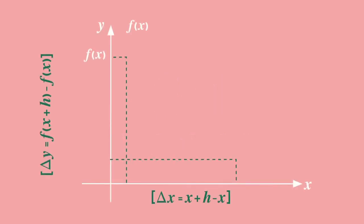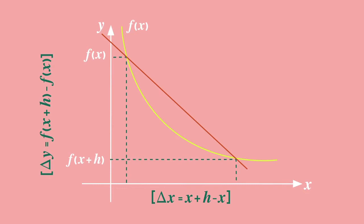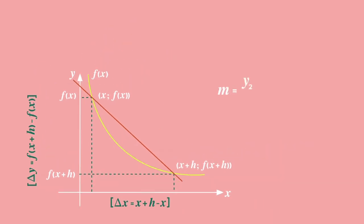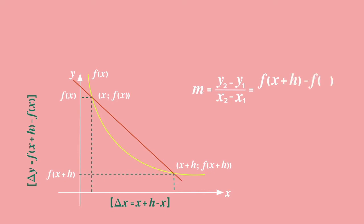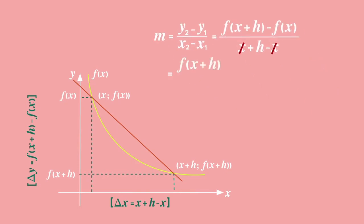We can determine the average gradient of the curve — where h is the horizontal distance between the two points — by drawing a secant through the points with x-coordinates of x and x plus h. The average gradient can be found as follows: m equals y2 minus y1 all over x2 minus x1, which equals f of x plus h minus f of x all over x plus h minus x. The x's eliminate each other in the denominator, so m equals f of x plus h minus f of x all over h.